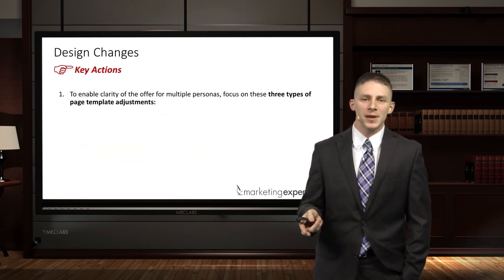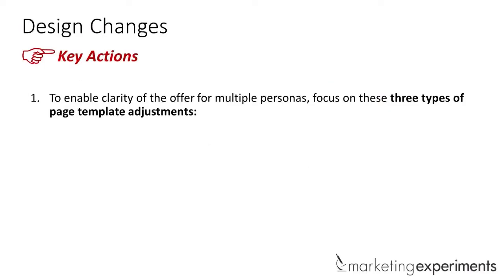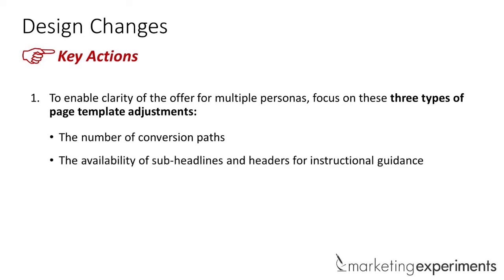So these are design changes — template changes. If you have the ability to make changes to your pages, there are three types we've discovered that can really make a difference. First: the number of conversion paths. Second: the availability of subheadlines and headers to give visitors instructional guidance. And third: the sequence of the content. Let's look at some examples of these kinds of changes pulled from the meta-analysis.